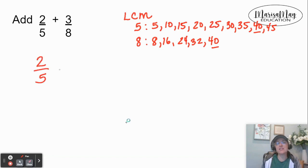Next, let's take two fifths and make it have a 40 in its denominator. And then we'll take three eighths and make it have a 40 in its denominator.